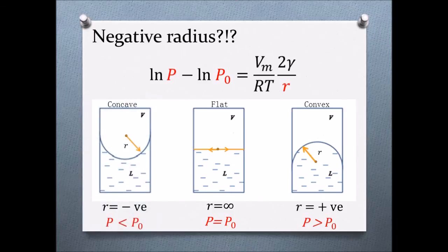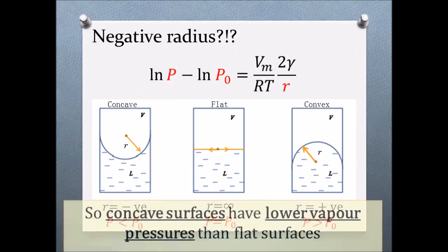As for a concave surface like a water meniscus in the capillary tube, the radius is measured from the vapor phase and is subsequently given a negative sign. And from the Kelvin equation, it can be seen that its vapor pressure will be lower than that of its equivalent surface.